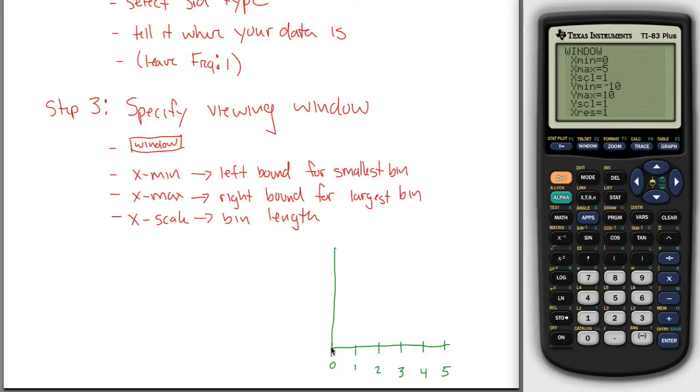If I want to make these bins smaller and have the GPAs from 0 to 0.5, 0.49999 to be exact, then I'd change my scale here to 0.5. But I think I like having them at 1, so I'm going to do that. Y min and Y max.